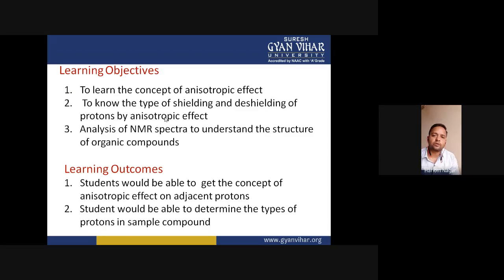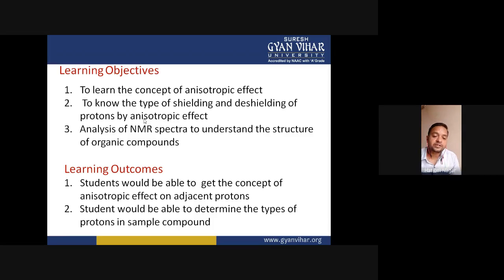The learning objectives of this lecture are: to learn the concept of anisotropic effect, and to understand the types of shielding and deshielding of protons by anisotropic effect — how certain protons are deshielded and others are shielded. Using these points we can analyze NMR spectra to understand the structure of organic compounds. Anisotropic effect and hydrogen bonding are observed in aromatic compounds and unsaturated compounds.